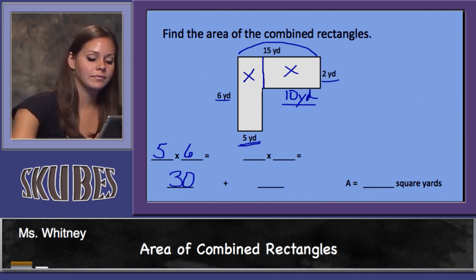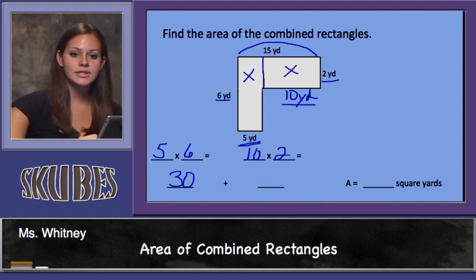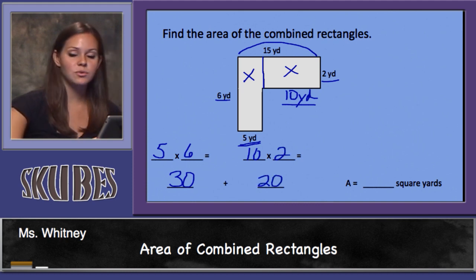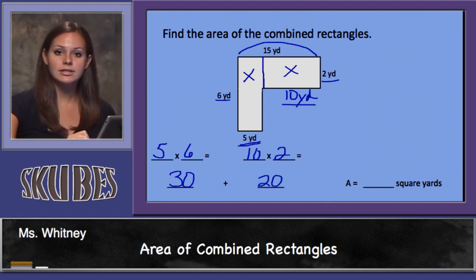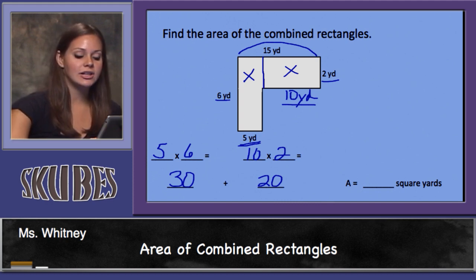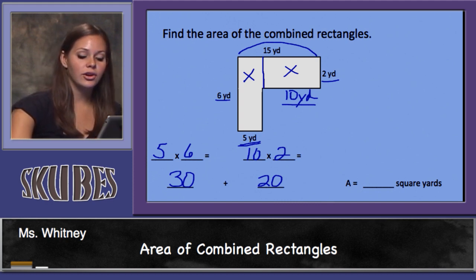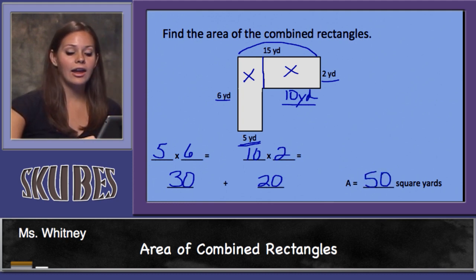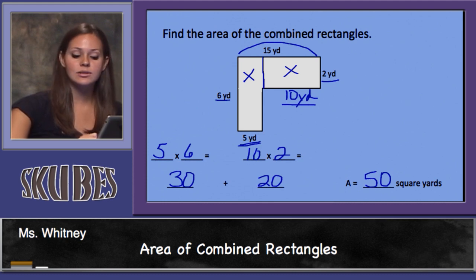So we'll multiply 10 times 2 to find the area, which equals 20 square yards. Now let's add the two sections: 30 plus 20 equals 50 square yards. The area of this shape equals 50 square yards.